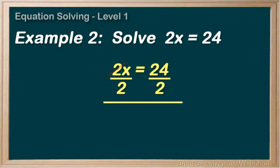On the left, 2x divided by 2 equals x. So we have the x by itself as planned. And on the right, we have 24 divided by 2 equals 12, or x equals 12.